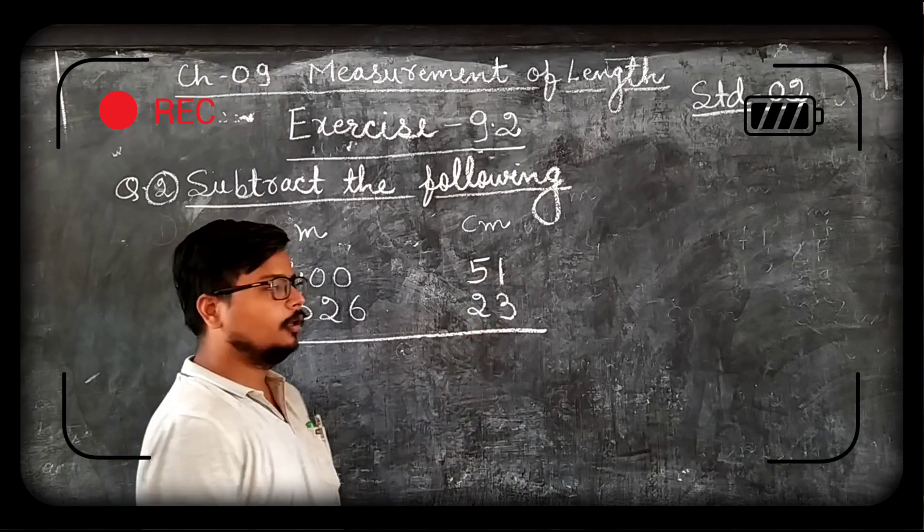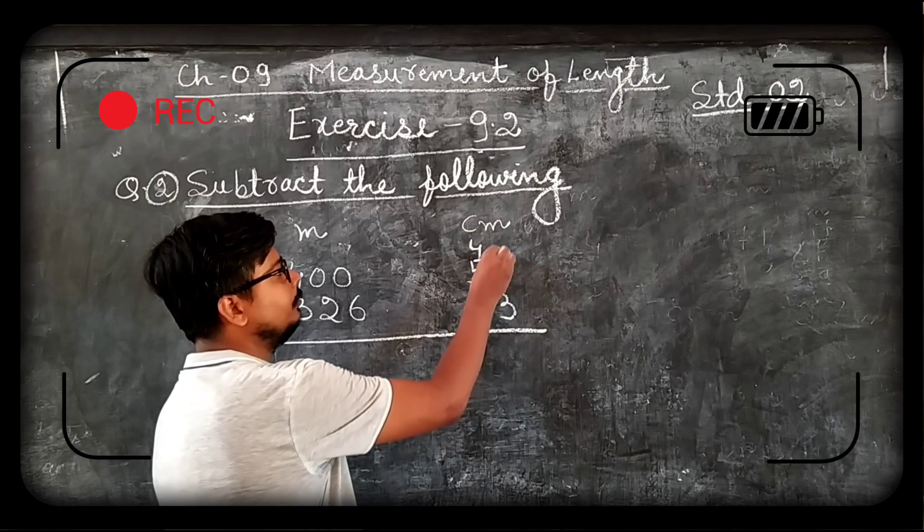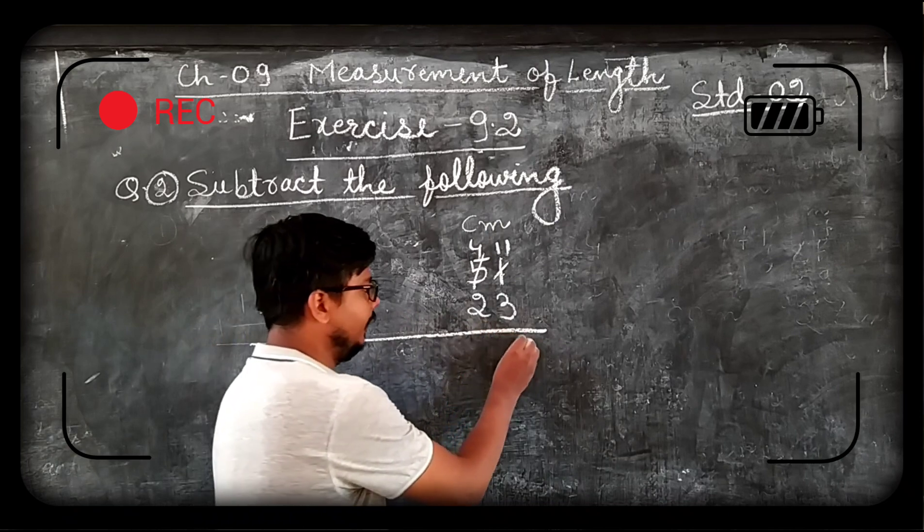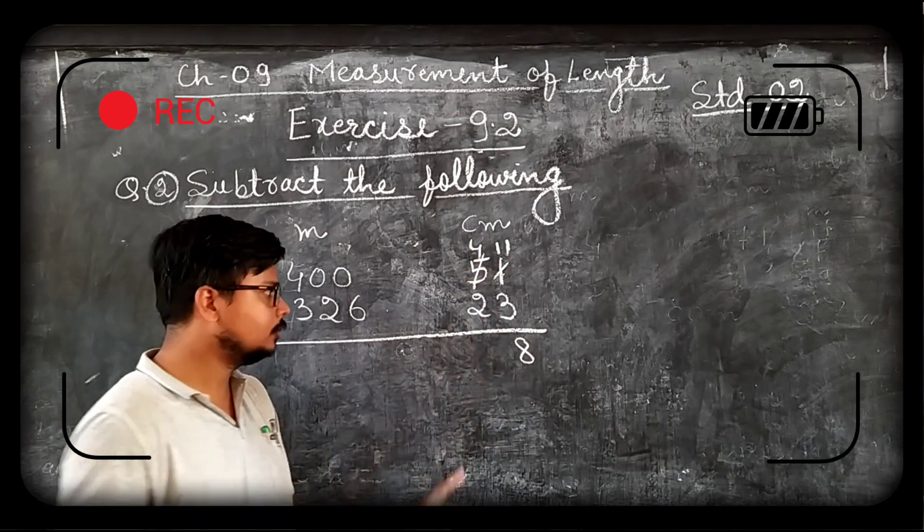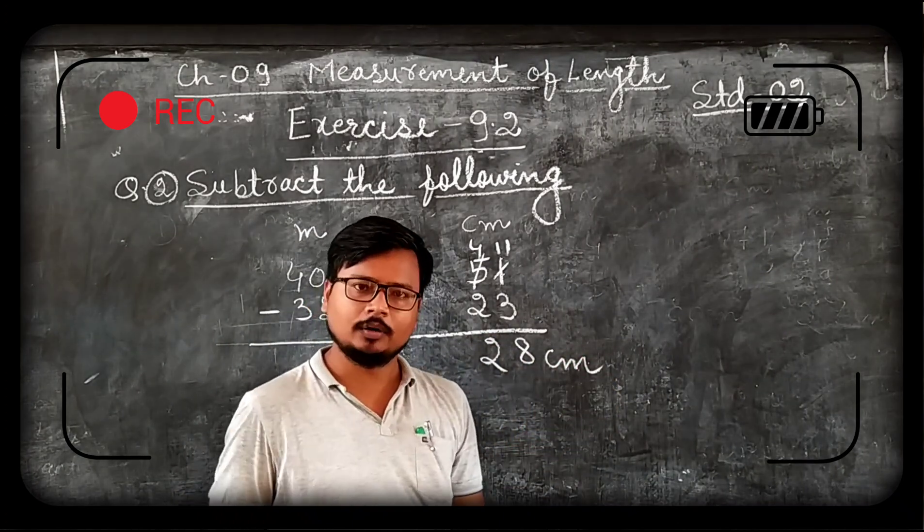From 1 we cannot subtract 3. So we carry 1 from 5. 5 becomes 4 and this 1 becomes 11. So 11 minus 3 is 8. Now 4 minus 2 is 2. So it becomes 28 centimeters.